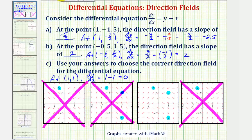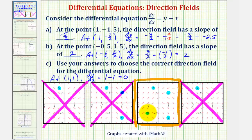Therefore, this third direction field is the correct direction field for the given differential equation. Notice how at the point (-1, -1), the slope of the segment is zero, which is correct because -1 minus (-1) would be -1 plus 1, or zero. I hope you found this helpful.